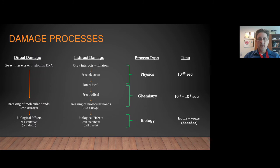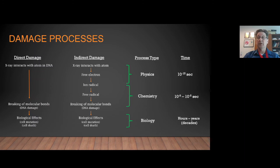After these physical processes occur, we start to see chemical changes. This is the production of ion radicals that diffuse and interact, producing free radicals. These free radicals then attach themselves, change the molecular bonding structure of other molecules, and damage DNA. All of these processes are categorized as chemical processes — chemical changes occurring as a result of that physical interaction. These tend to happen much slower, on the order of nanoseconds up to tens of microseconds.